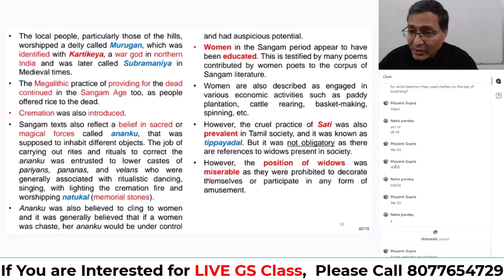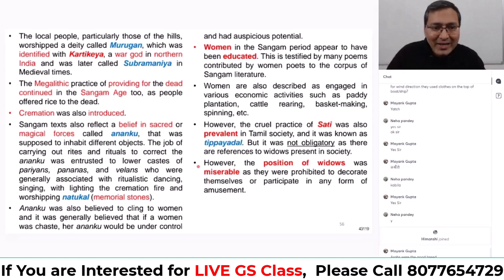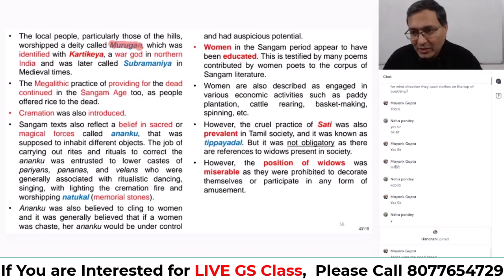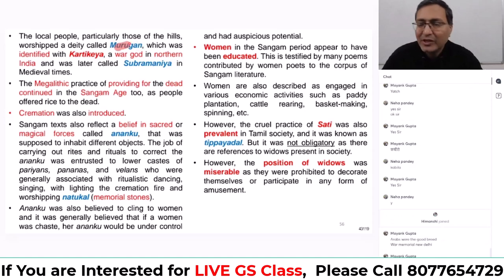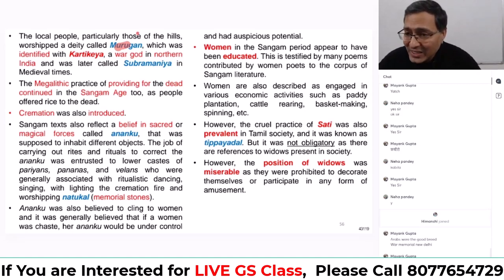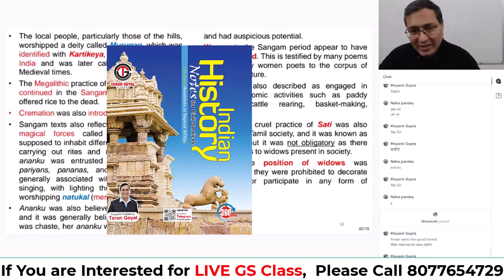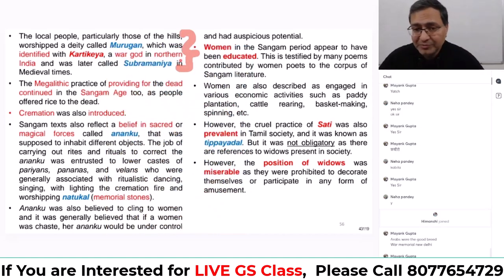The deity most worshipped locally was called Murugan. Murugan is identified with Kartikeya, one of the sons of Lord Shiva. The texts and scriptures of the Sangam era refer to god Murugan. Lord Murugan is considered one of the avatars — one of the forms — of Lord Shiva.